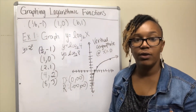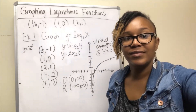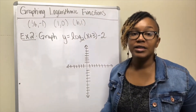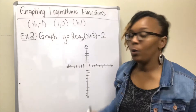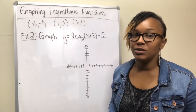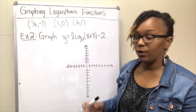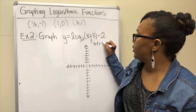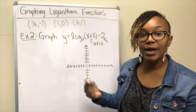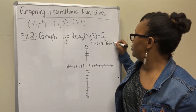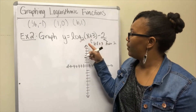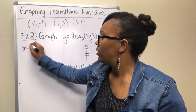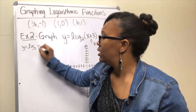For Example 2, we want to graph y = log₂(x + 3) - 2. This involves transformations: adding 3 inside with x shifts the graph left 3 units, and subtracting 2 outside shifts the graph down 2 units.